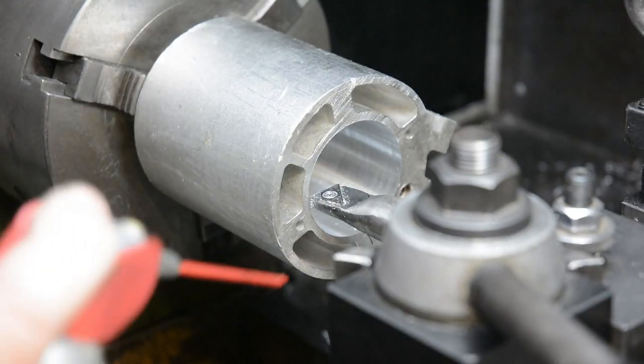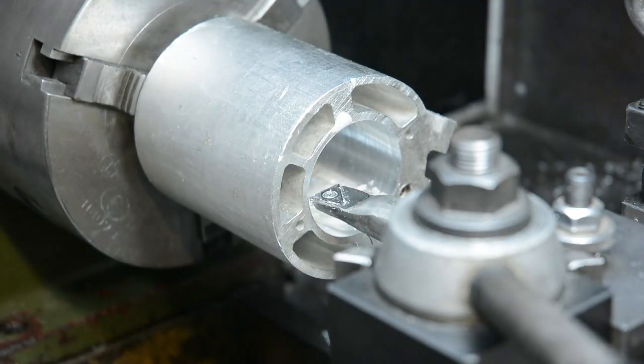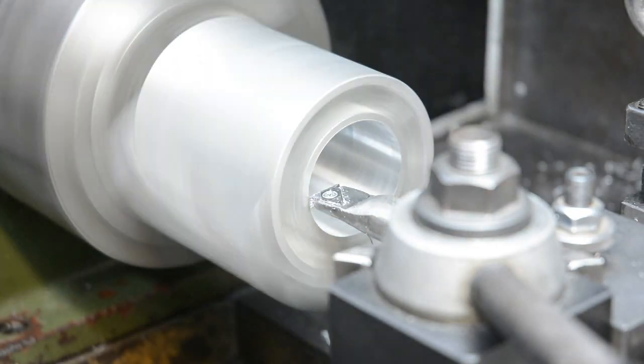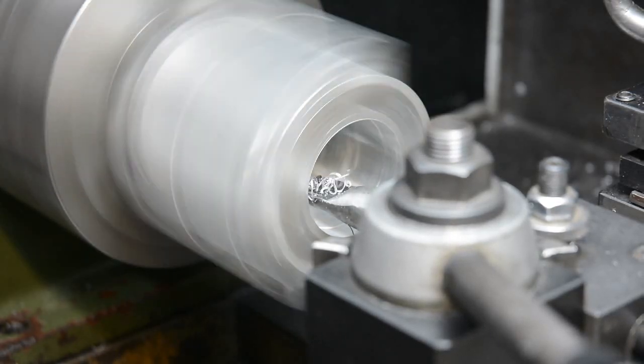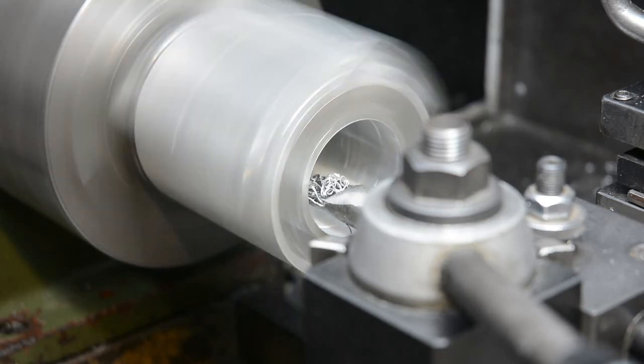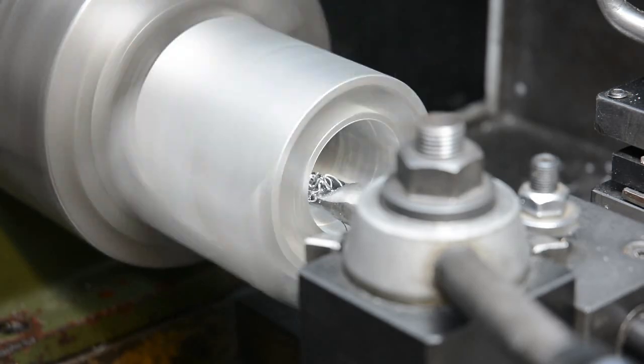Time to bore the old bearing housing out a few millimetres to suit the shaft. I'm just taking quite a light cut because I don't want to knock it out of the chuck or knock it out of square.